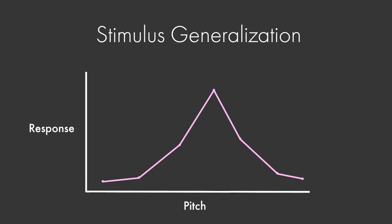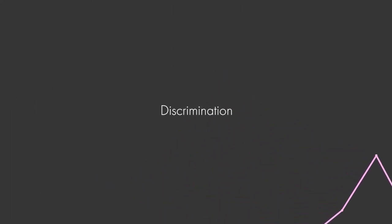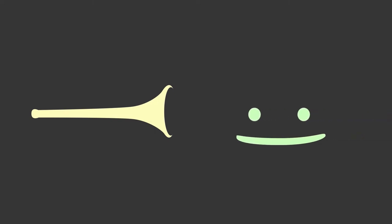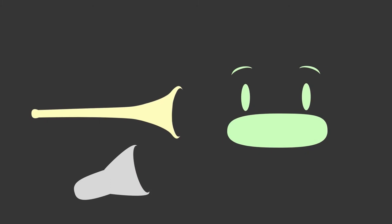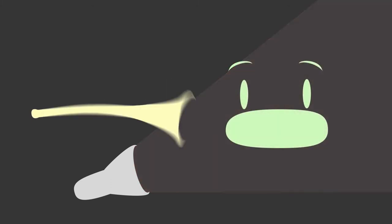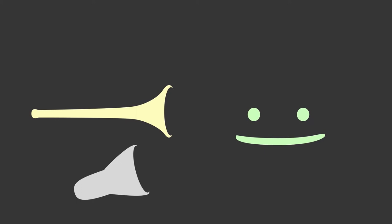In addition to being able to generalize stimuli, organisms are also able to discriminate between different stimuli. The phenomenon of discrimination is easy to demonstrate. An experiment might use a loud boat horn as the unconditioned stimulus, which reliably produces a startle response. In the first part of the procedure, a red warning light is paired with the boat horn, and after a few pairings, this stimulus will reliably produce a conditioned response — you'll tense your muscles whenever the light appears.